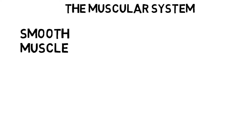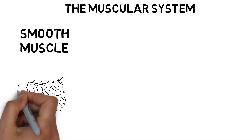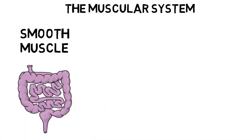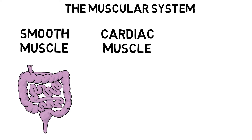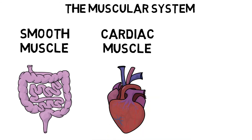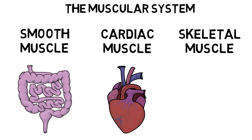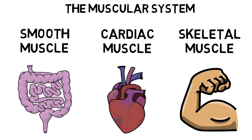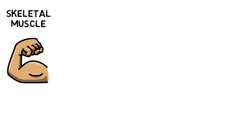We have three different types of muscles. Smooth muscles, which are located in the walls of hollow organs such as the digestive tract and contract involuntarily. Cardiac muscles, which are located in the walls of the heart and are once again contracted involuntarily. And skeletal muscles, which are located all over the body, attach to bones and other connective tissues — these are the muscles that we can contract voluntarily.